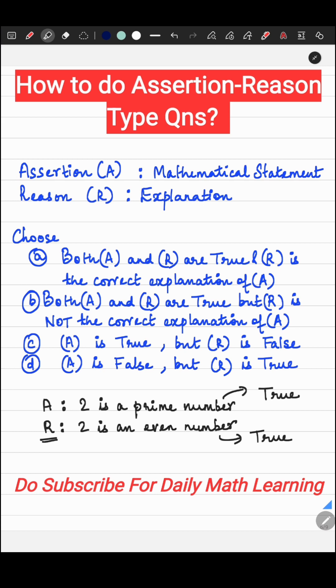So R in this case does not explain or is not a correct explanation for A. Which option would you choose? You will choose B because here both statements are correct, but R is not the right explanation for A. So the answer will be B.